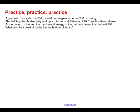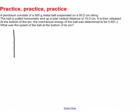Last one: a pendulum consists of a 500 gram metal ball suspended on a 50 centimeter string. The ball is pulled horizontally up a total vertical distance of 10 centimeters, then released. At the bottom of the arc, the mechanical energy of the ball was determined to be 0.491 joules. What was the speed of the ball at the bottom of its arc? To visualize: we pull the pendulum to the side, raising it 10 centimeters, then let it swing down to its lowest point.